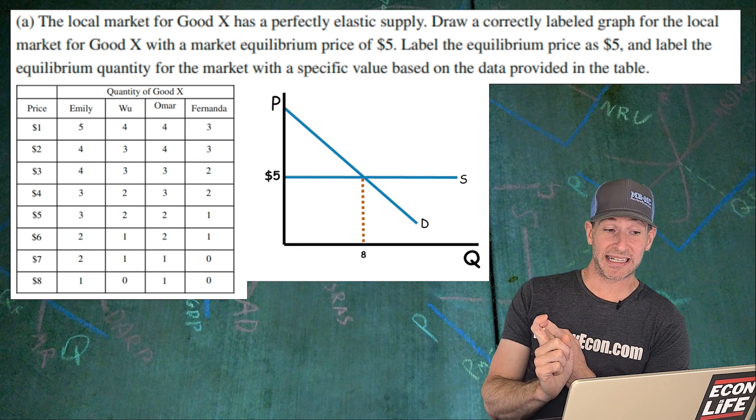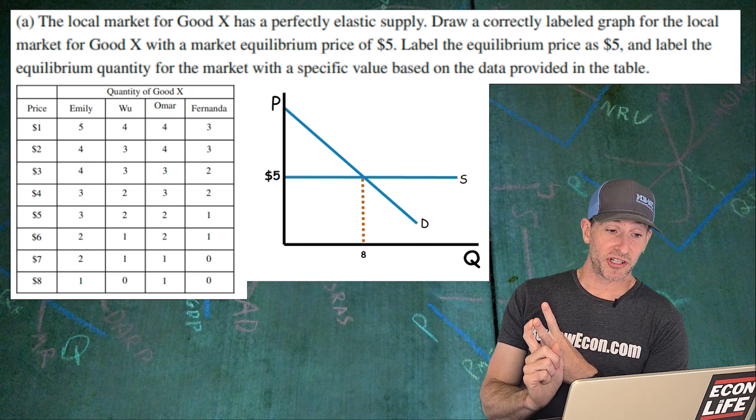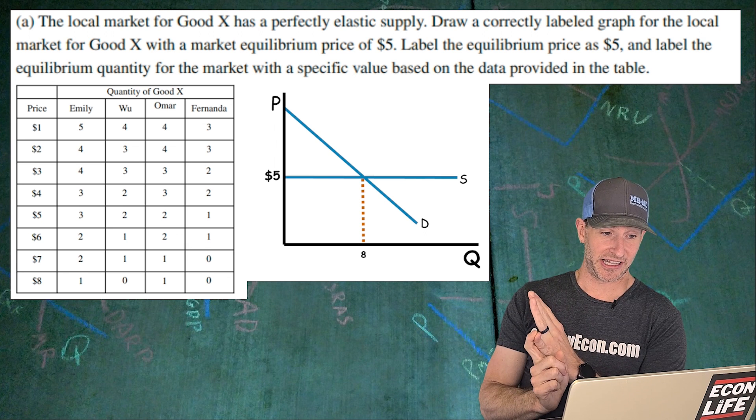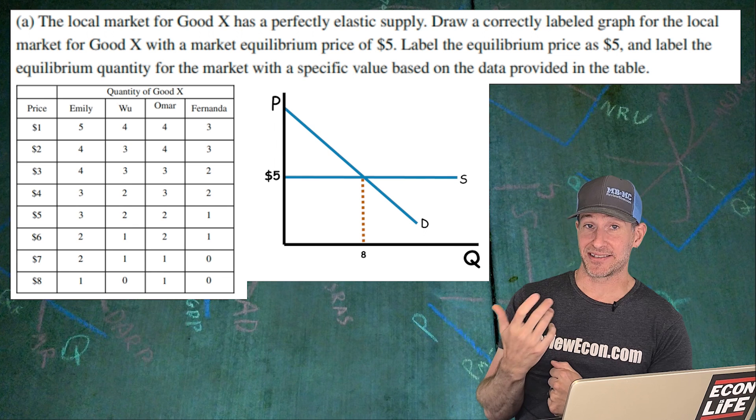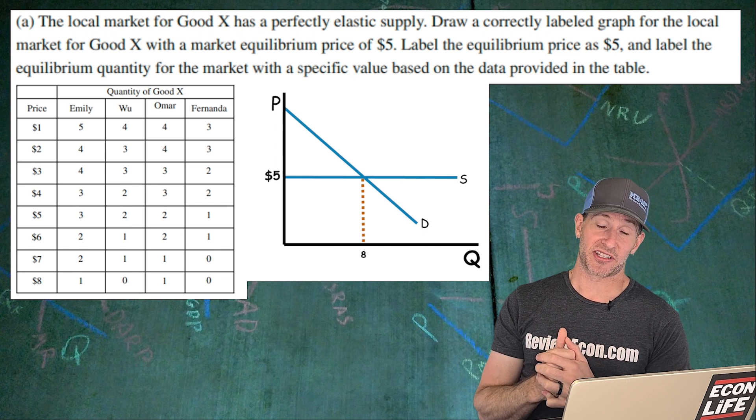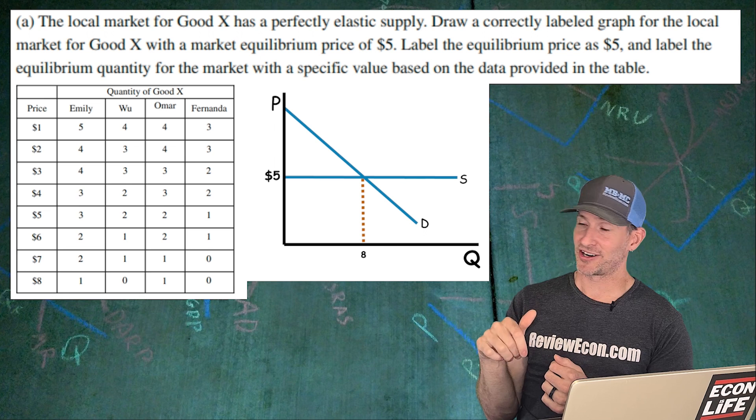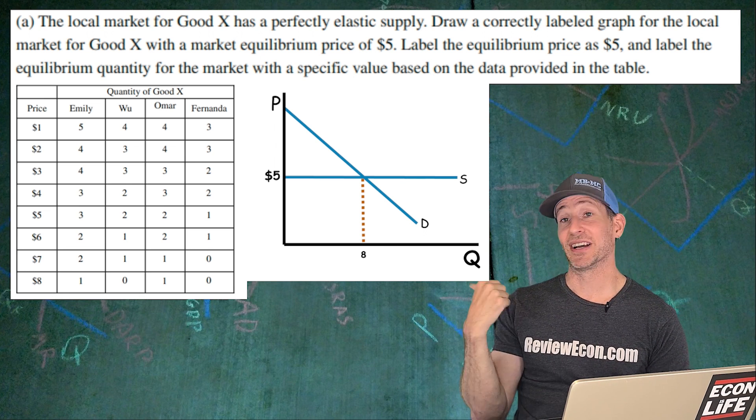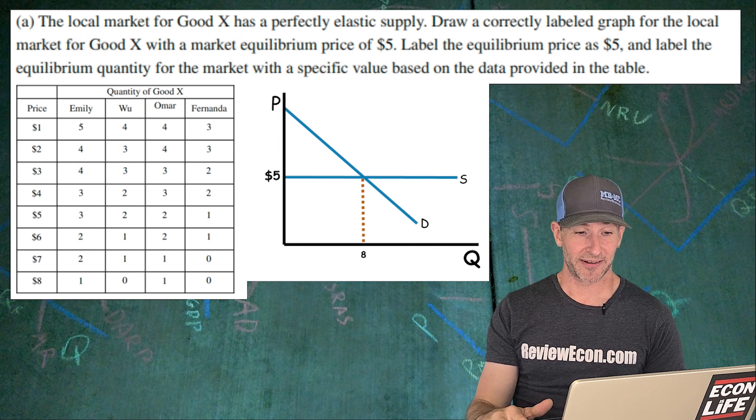So if we see at $5, if you look there at $5, Emily will demand three, Wu will demand two, Omar will demand two, and Fernanda will demand one. So add those all together. That's eight is our equilibrium quantity there, or that's our quantity demanded there. And so since we have a perfectly elastic supply curve, that ends up being our equilibrium. So at $5 we've got a quantity of eight and I think that's what they're going to be looking for there.